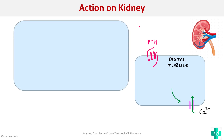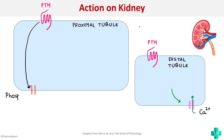Parathormone also acts on the proximal tubules, where it inhibits the phosphate channels. This causes decreased reabsorption of phosphate, meaning phosphate is excreted into the urine. So there are two opposing functions: increased calcium reabsorption and phosphaturia, or decreased phosphate reabsorption.